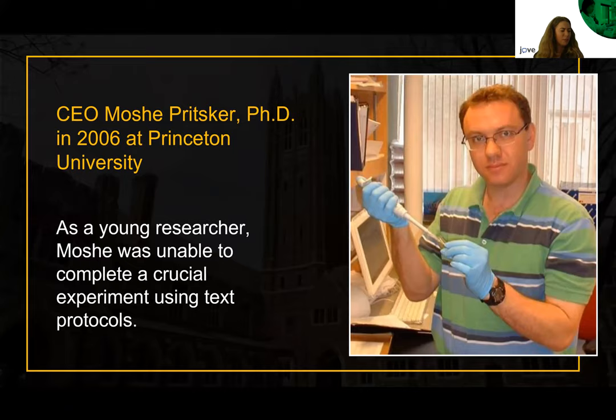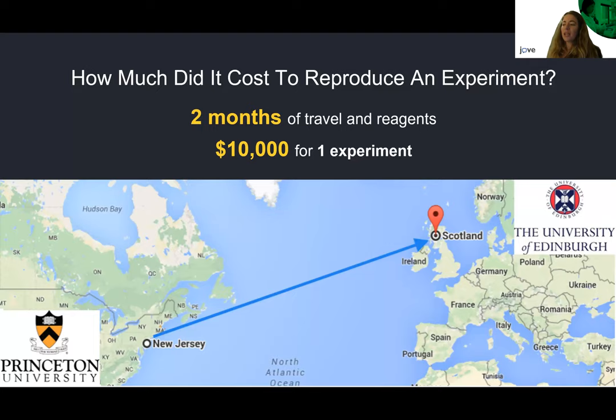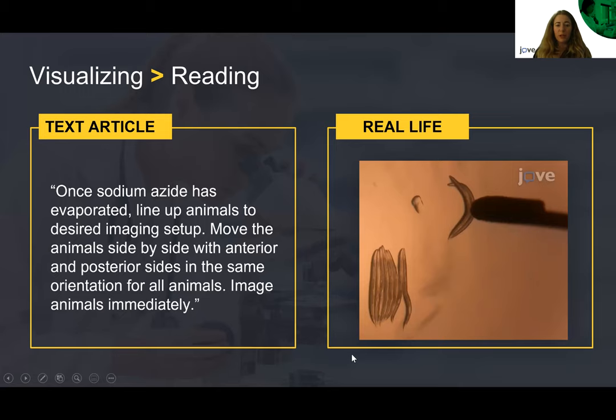Moshe did what most PhD students do — he went to his supervisor and complained that the experiment wouldn't work. In the end, they decided to send Moshe all the way to Attenborough, Scotland, where this experiment was originally done. He spent two months in that lab trying to learn this one experiment, and that cost about $10,000. On his way back, Moshe came up with the idea: what if we didn't just publish scientific methods in a written format? What if we actually showed people how the original authors intended for you to do this experiment? And this is how Jove's video journal was born.